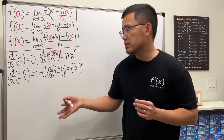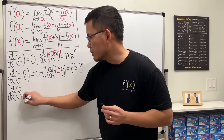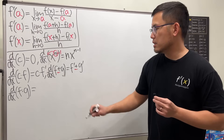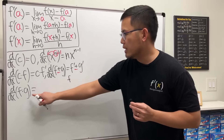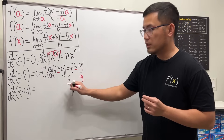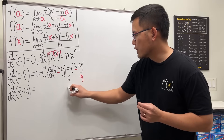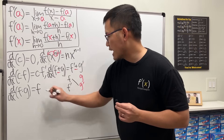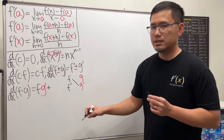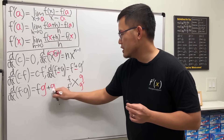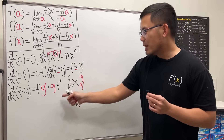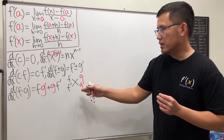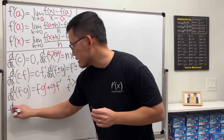After sum and difference, we have the product rule. Write down f and g side by side. Differentiate each separately. Then combine: the first function f times the derivative of the second, g prime — plus — the second function g times the derivative of the first, f prime. So the product rule gives f·g prime plus g·f prime. Check out my other videos for worked examples.